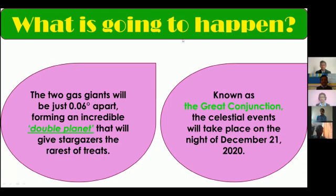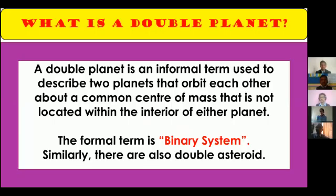What is a double planet? A double planet is an informal term used to describe two planets which orbit each other and have a common center of mass, but this center of mass is not located within the interior of either planet. The formal term for this is binary system.